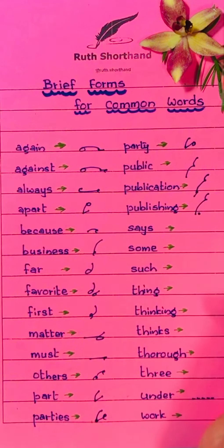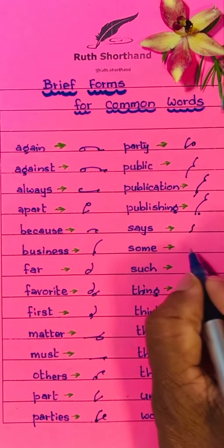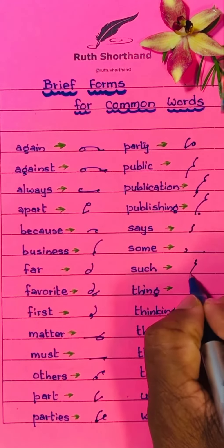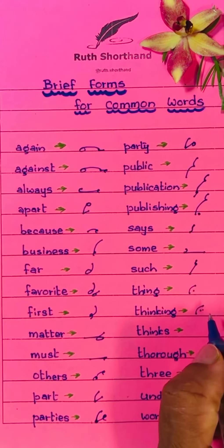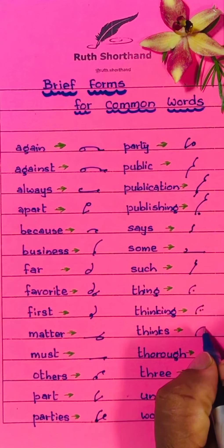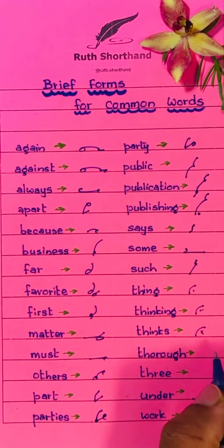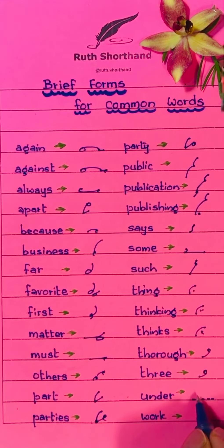Previously we learned about 'says' — 'says' is a brief form. Some, in, such, thing, thinking — written with a double stroke. Things — this is like a comma stroke. Thorough uses the same strokes, and 'they' and 'should' are written over the line.